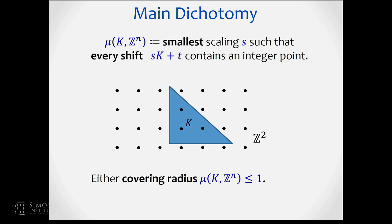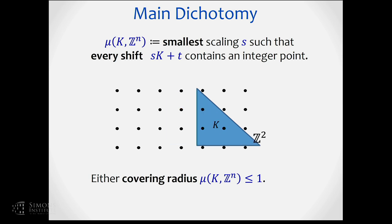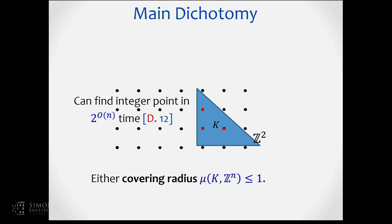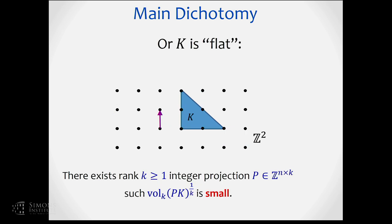There are two dichotomous cases when solving IP. The first case is when you have a body K that is super big, with clearly tons of lattice points inside. We quantify this in terms of the covering radius: the minimum scaling such that no matter where you shift the body, it still intersects the integers. When the body is really big and fat, we can find the integer points in singly exponential time. The hard part is when the covering radius is large and k is flat in some way.